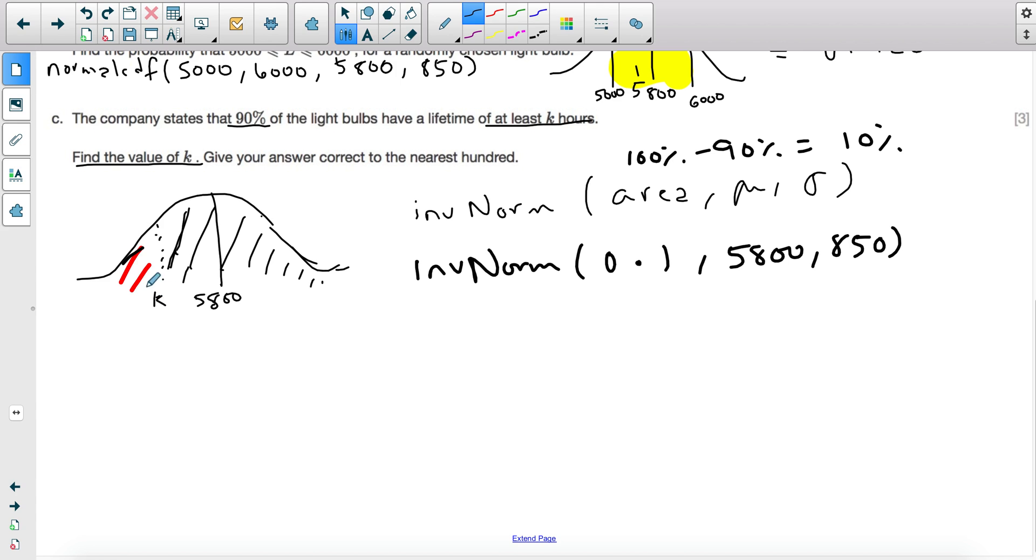So this will give you the value of K, the value of K such that the area underneath it is 0.1. But also coincidentally that the area above it is 90% or 0.9. So it should work either way. Again, if you have the newer GDC calculators and you can pick a right or a left tail, you can actually just stick to the 90%.